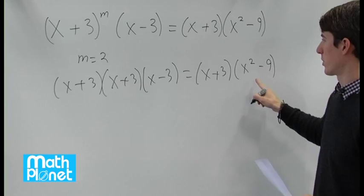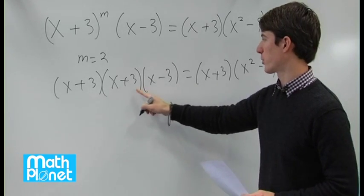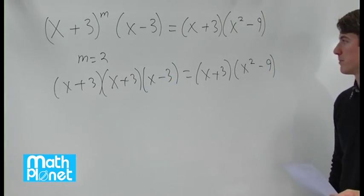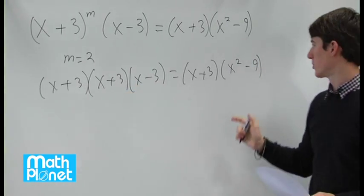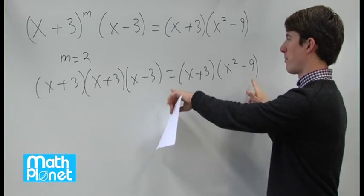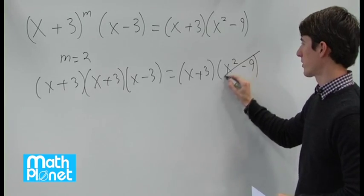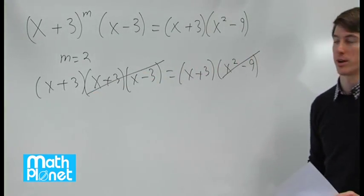This conjugate can be written as x plus 3 times x minus 3, because if you multiply that out, then the cross term cancels and you just get x squared minus 9. So this cancels with these two quantities.